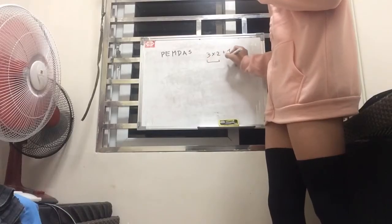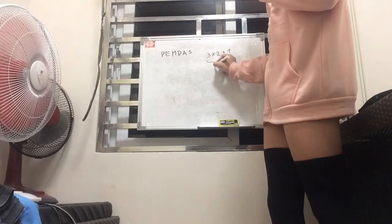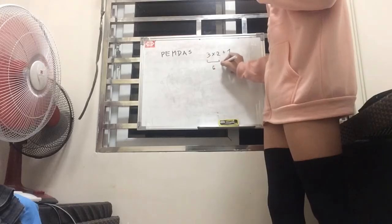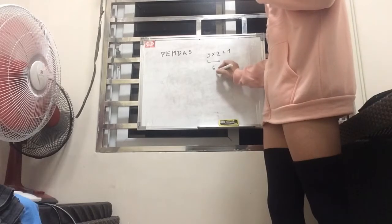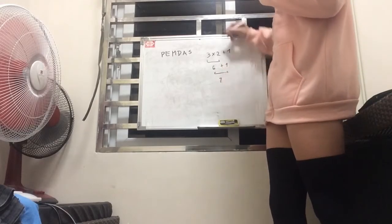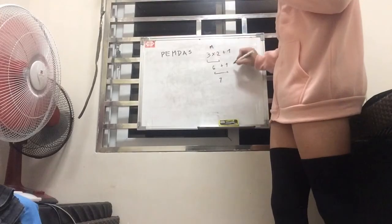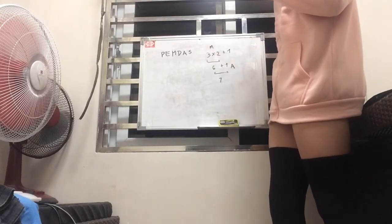So we do 3 times 2 first, and then the resulting product, which is 6, we add that by 1, which gives us 7. So we first perform the multiplication, and then we perform the addition.